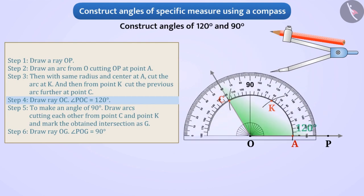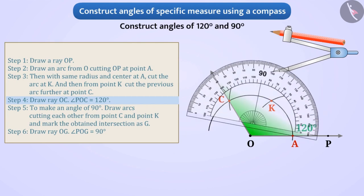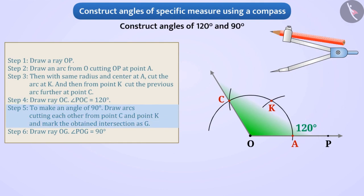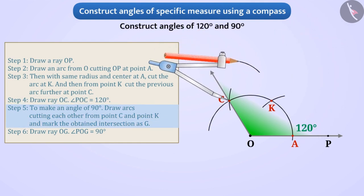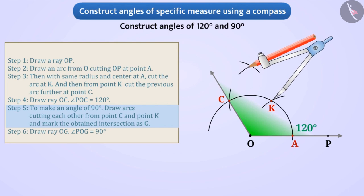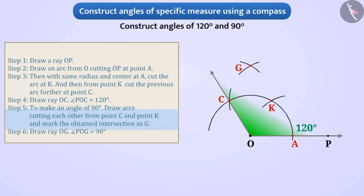We can verify this using the protractor. Step 5: To make an angle of 90 degrees, we will draw arcs cutting each other from C and K, and name the intersection point G. Step 6: Drawing ray OG from O gives an angle measuring 90 degrees.